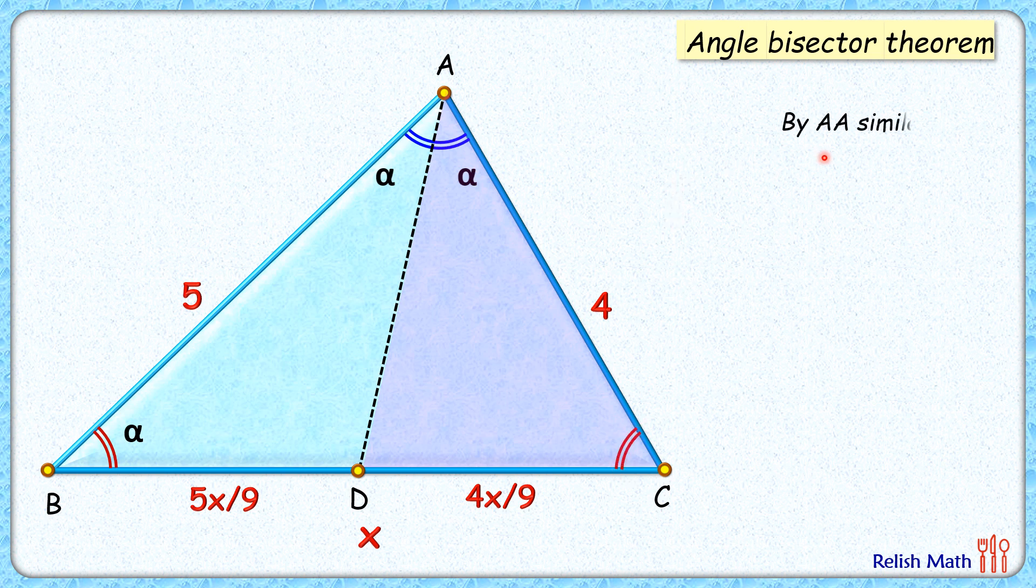So we can say by angle-angle similarity, triangle ADC is similar to triangle BAC. As the triangles are similar, the ratio of corresponding sides will be equal. So here the ratio of AC upon DC will be the same as BC upon AC.